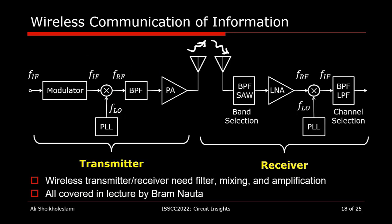We could also communicate information wirelessly through the air. We use electrons at the transmitter to prepare a current for the antenna, creating a wave that propagates from the transmit antenna to the receive antenna. We then use analog signal processing to extract the useful data. The three main building blocks in wireless transceivers are filters, mixers, and amplifiers — all covered in a lecture by Bram Nauta later in Circuit Insights.